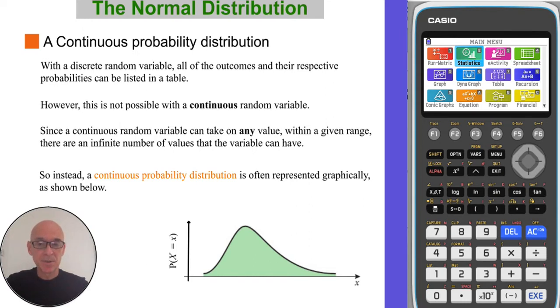Since a continuous random variable can take on any value within a given range, there would be an infinite number of values that the variable can have. So instead, a continuous probability distribution is often represented graphically as shown in the diagram here.